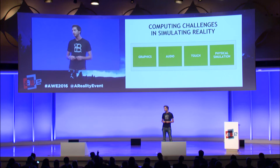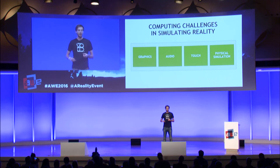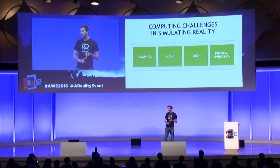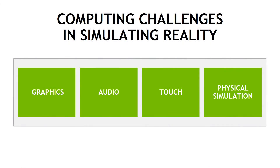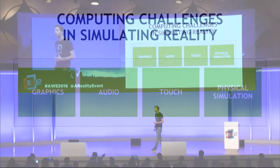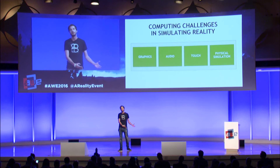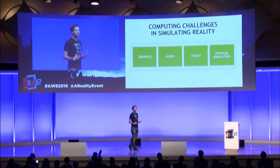But there's a large but. There are a lot of computing challenges in simulating reality. If you want to give people a very convincing experience, you have to address not only the graphics side of things, but also audio, touch — the interaction with the virtual world — and physical simulation. If you're going into virtual reality, you want things to behave just as they would in real life: water to flow like water, fire to react like fire. You want everything to be very convincing, and that is essential for a good VR experience.